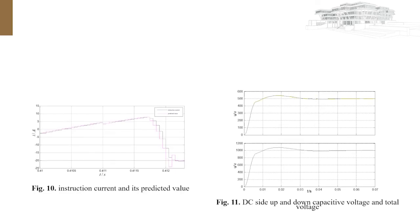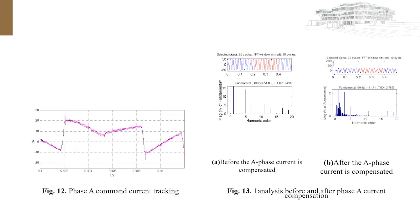Figure 10 shows the induction current and the predicted command current obtained by the advanced-link calculation using the PQR detection method. It can be seen that the predicted instruction exceeds the previous switching cycle, but the calculation error of the current inflection point is large. Figure 11 shows the DC side voltage, the lower capacitor voltage, and the DC side voltage of the 3-level APF.